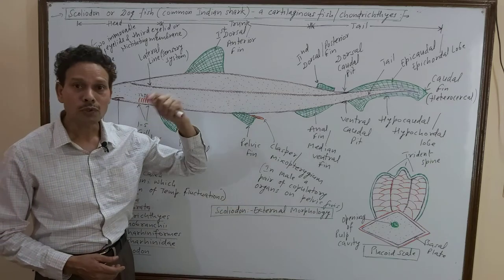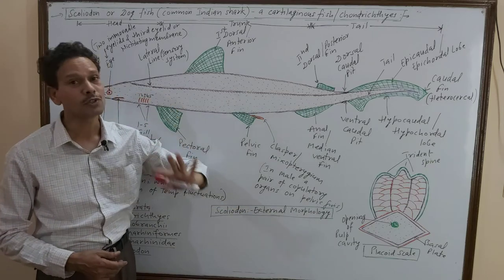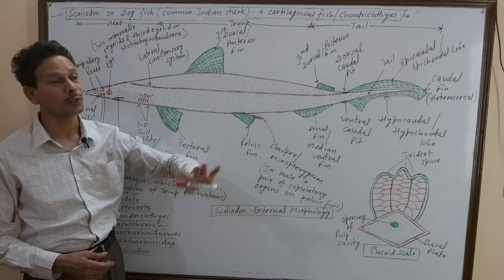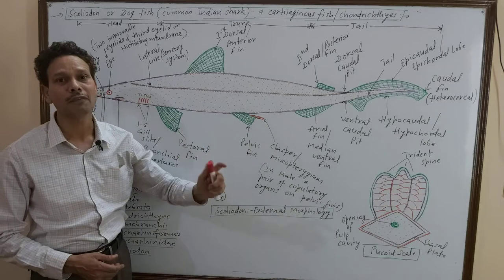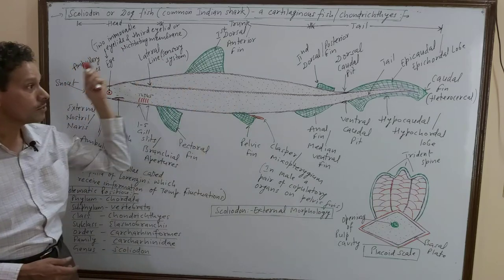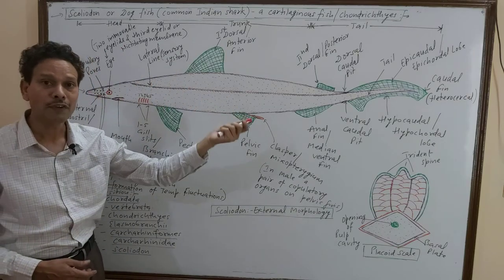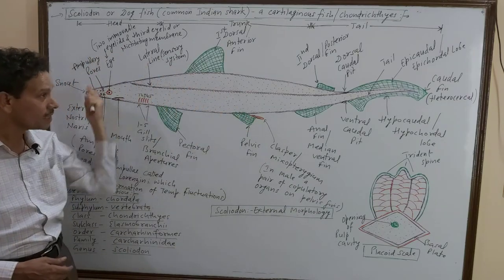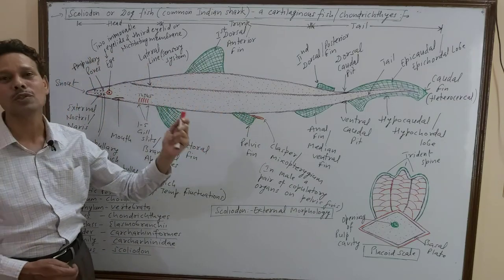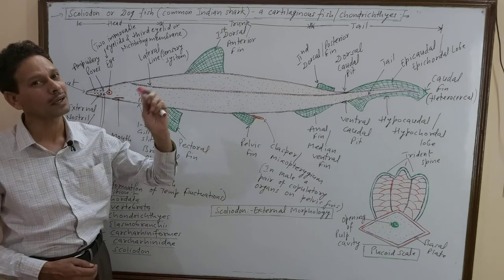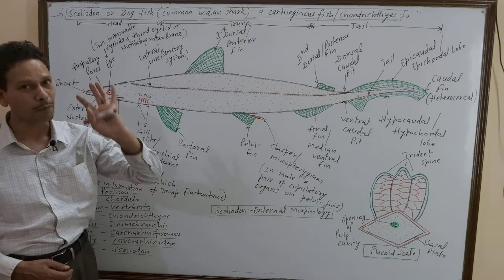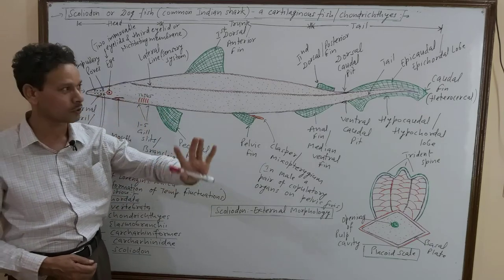Today, children, I am going to give a lecture for competition, so strictly be careful. Today we will discuss Labeo, the bony fish, versus Scoliodon, the cartilaginous fish. This is a key point.